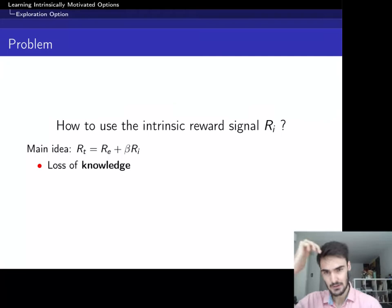And there are two problems that basically come up with this idea. And the main one, I would say, is the loss of knowledge. Basically, you're expecting the intrinsic reward RI to disappear in time. So that over time, you're only left with the extrinsic reward and your agent can be optimal.